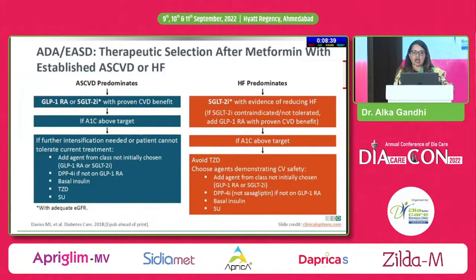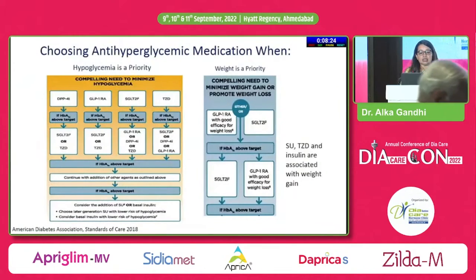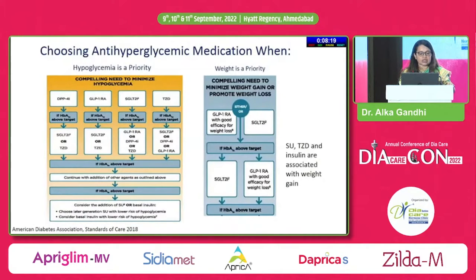If heart failure predominance, use SGLT2 inhibitor with evidence of reducing heart failure. If still not on target, use GLP-1, DPP-4, basal insulin or SU. If there is a need to avoid hypoglycemia, use agents like DPP-4, GLP-1, SGLT2 or TZD.